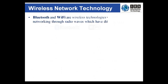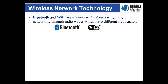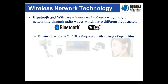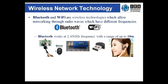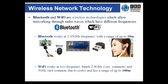Bluetooth and Wi-Fi work with different frequency radio waves. Bluetooth has an effective range of about 10 metres, while some Wi-Fi can work up to 100 metres. These numbers assume that the radio waves can travel unimpeded through the air between the two devices. Buildings, walls, and even trees can affect the range of these technologies and the strength and reliability of their signals.